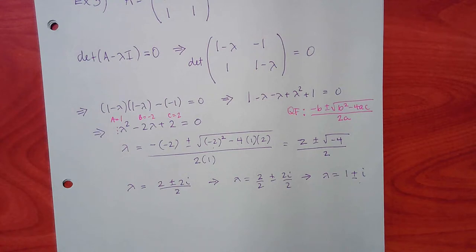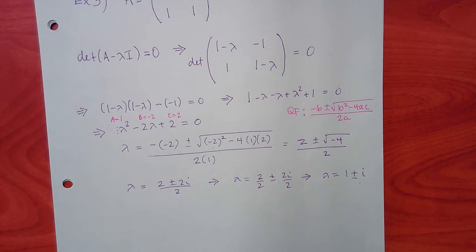With complex eigenvalues, you don't have to solve both. The good news: there's a rule — if lambda equals a plus bi corresponds to K1, then the conjugate lambda equals a minus bi automatically corresponds to K2, which is the conjugate of K1.